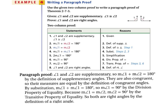In paragraph proof form, you don't have to have it exactly, but we start by saying angle one and angle two are supplementary, so their measures add up to 180 by the definition of supplementary angles. Since they are also congruent, their measures are equal by definition of congruent angles. By substitution, the measure of angle one plus the measure of angle one equals 180, so the measure of angle one equals 90 by the division property of equality. Because the measure of angle one equals the measure of angle two, by transitive property of equality the measure of angle two is also 90, so both are right angles by definition of a right angle.